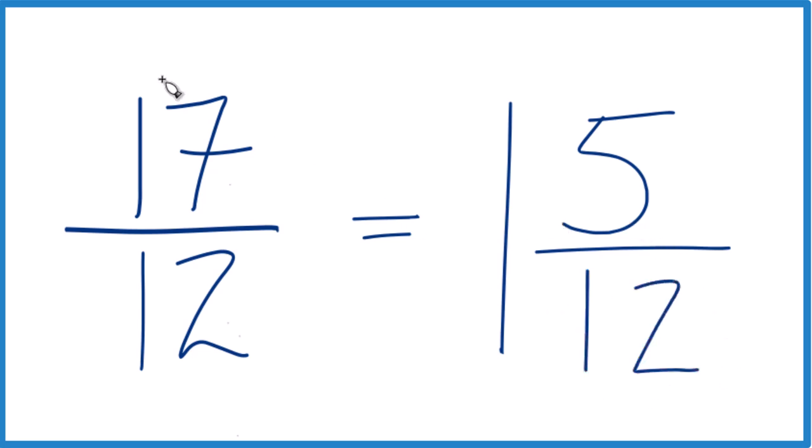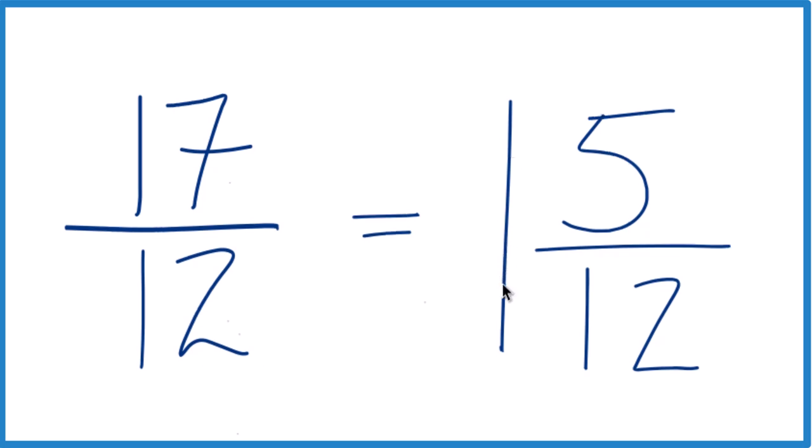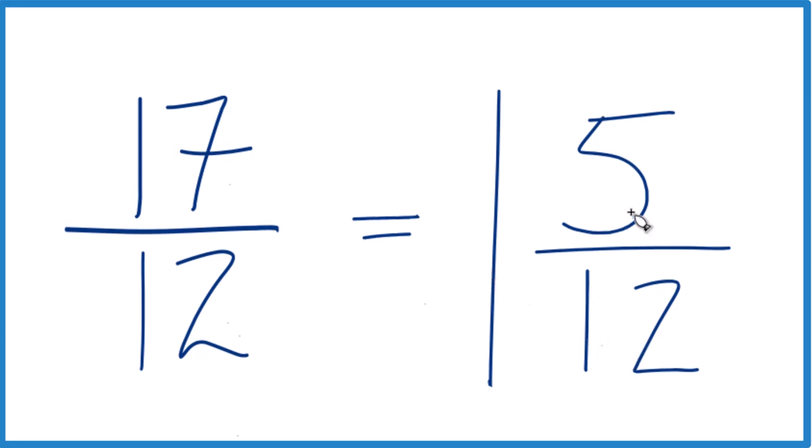So the fraction 17 twelfths equals the mixed number 1 and 5 twelfths. And you can check that, because 1 times 12 is 12, 12 plus 5 is 17, and we keep this 12 the same. So that's how you do it.